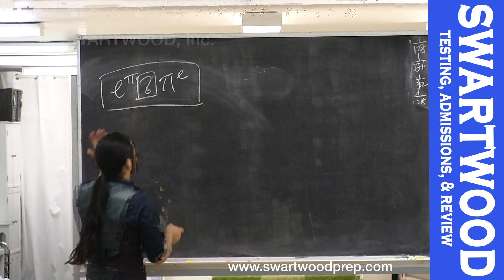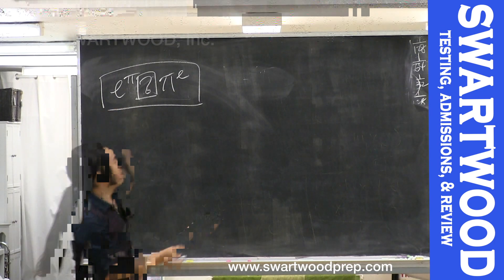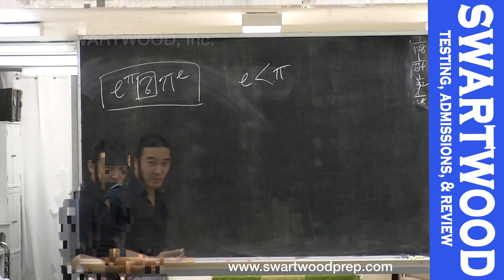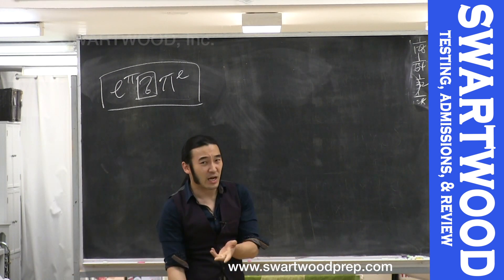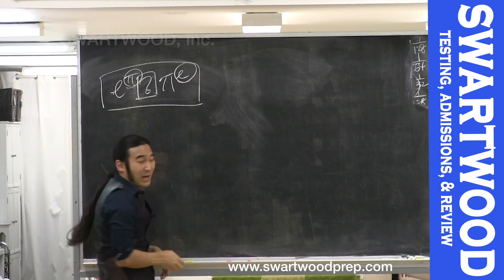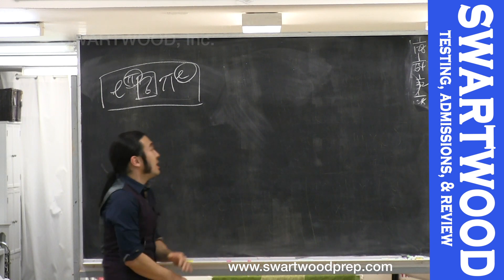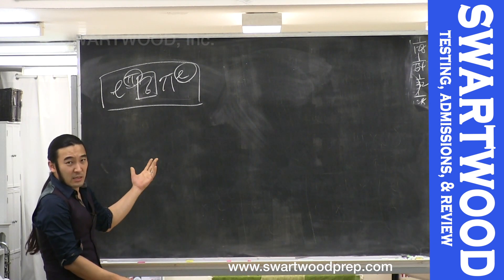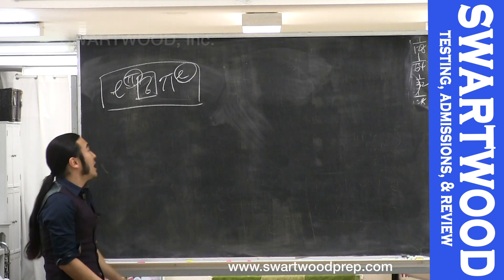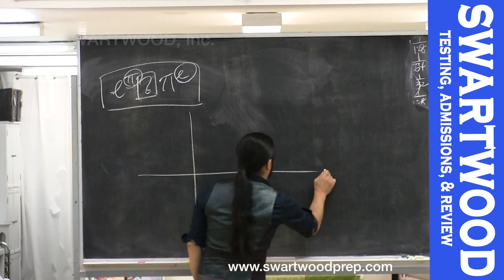So a couple things. First, what's the motivation? If you want to compare e and pi, that's pretty simple — pi is bigger. What makes this tricky is the exponent: e to the pi versus pi to the e. One thing you want to do to make exponents more manageable is use logarithms. A good idea would be to take the log of both and compare. In this particular case, we'll use that as inspiration for a visual approach.